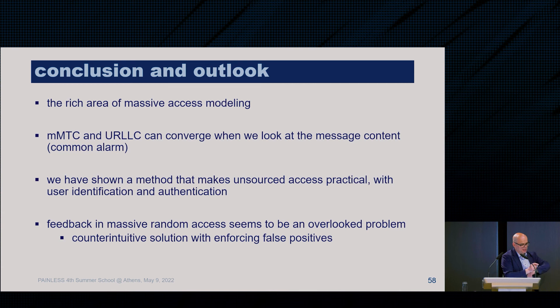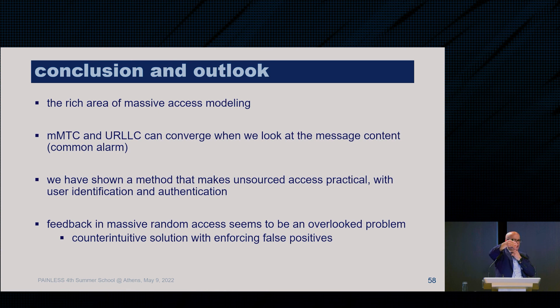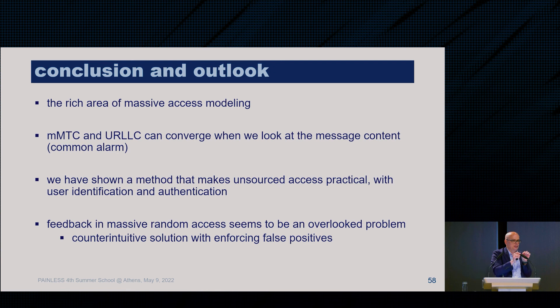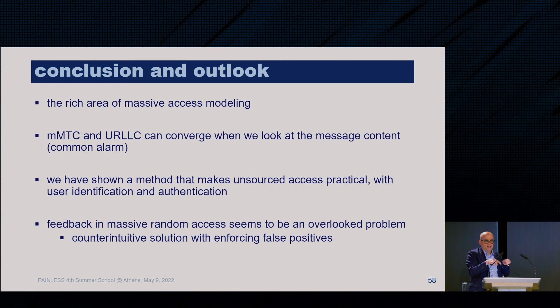In conclusion, I tried to convince you that there is a rich area of massive access modeling applicable to radar, power, RIS, and other contexts discussed today. Massive ultra-reliable communication is possible when information is correlated. I showed a method to add user identification to unsourced access without violating the random codeword assumptions. Finally, I addressed the downlink feedback problem, borrowing techniques from other fields. Thank you.